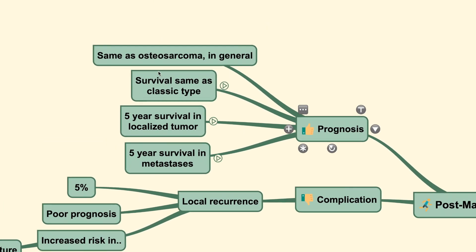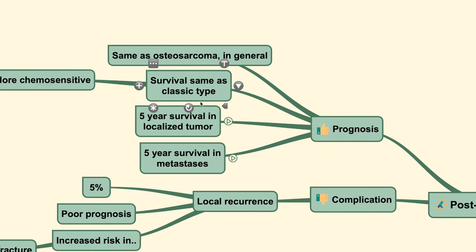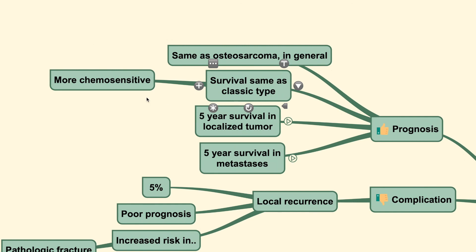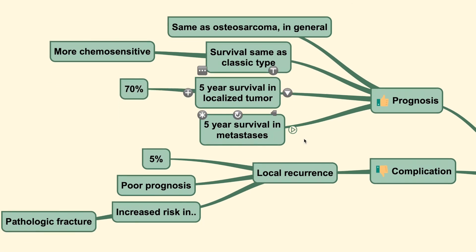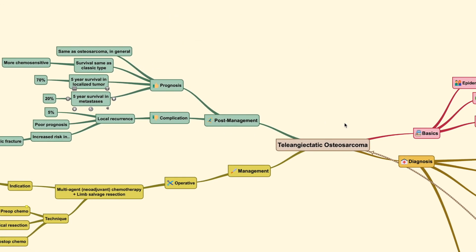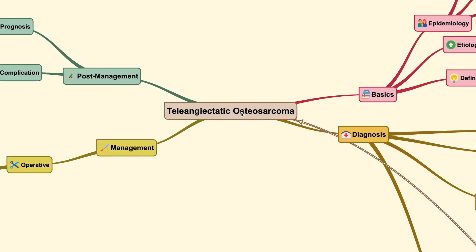As for the prognosis, these tumors generally have the same prognosis as classic osteosarcoma, and survival is also similar. However, these patients are generally more chemosensitive. The 5-year survival rate in localized tumor is up to 70%, while in patients with metastasis it is as low as 20%. That is all for today's discussion on teleangiectatic osteosarcoma. Be sure to check out my channel and subscribe to Orthopedic Tumor for more videos.